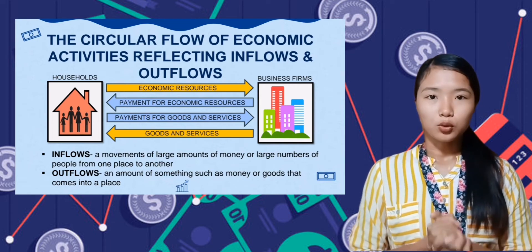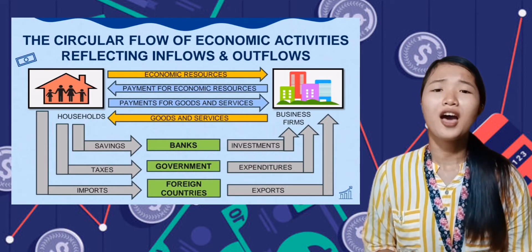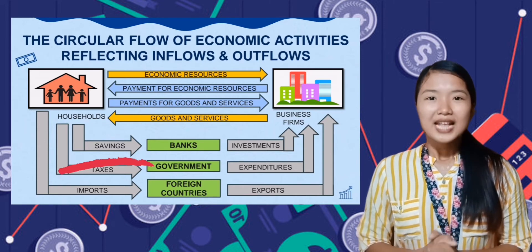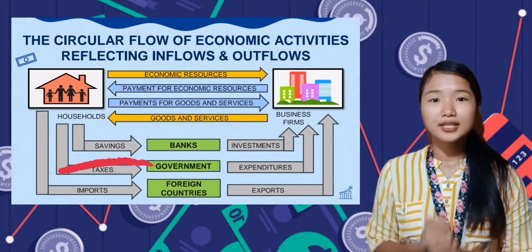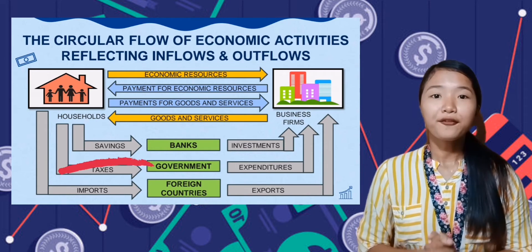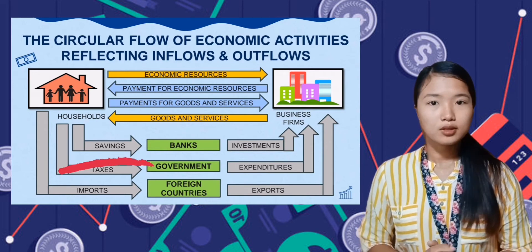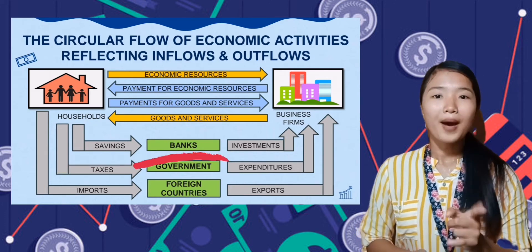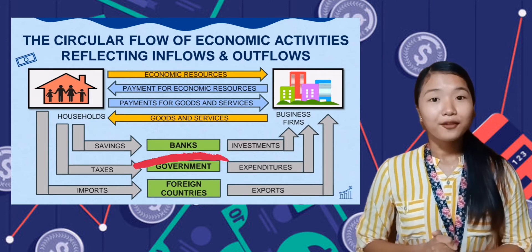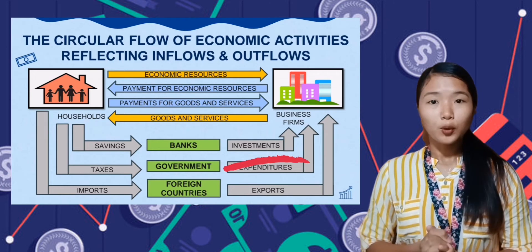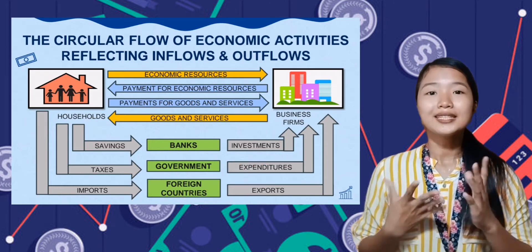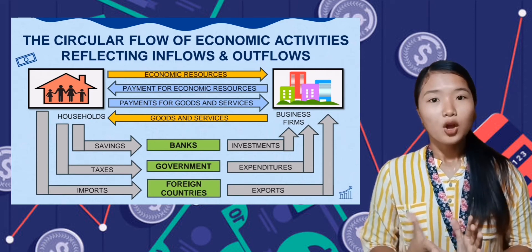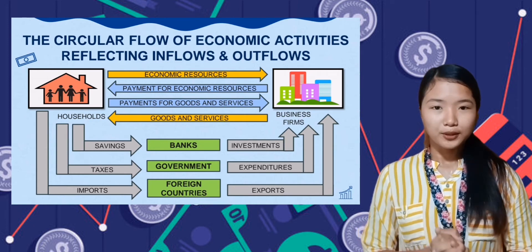What will happen if the household saves? Precisely, the income of the business firm will be reduced, since the money intended to buy goods and services from the business firm will be diverted to household savings. However, if the household saves money through the bank and the bank allows the business firm to borrow money for investment, then the circular flow remains in good condition — there is still a flow of money. Please be reminded that the bank is also a business firm, separated for discussion purposes only.